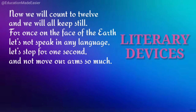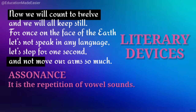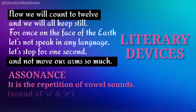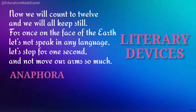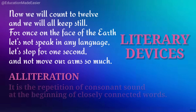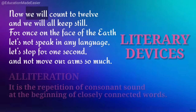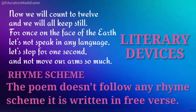Literary devices in stanza one: assonance — 'now we will count to 12, not move our arms so much' with the O and E sounds repeated; anaphora — two lines beginning with 'let's'; alliteration — the W sound repeated in closely connected words. The poem doesn't follow any rhyme scheme and is written in free verse.